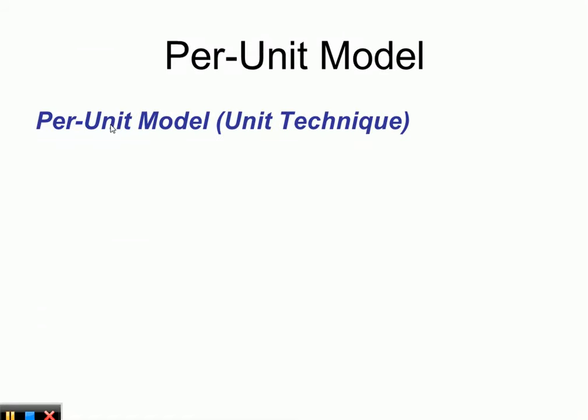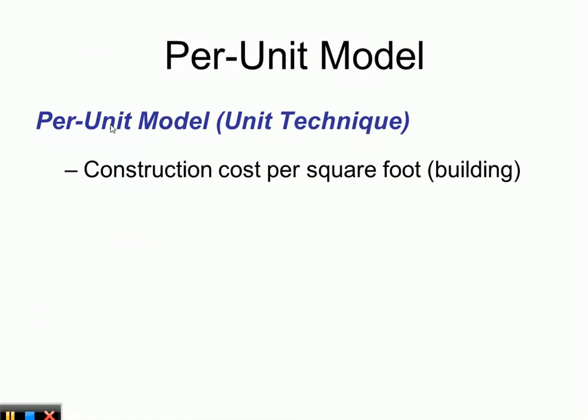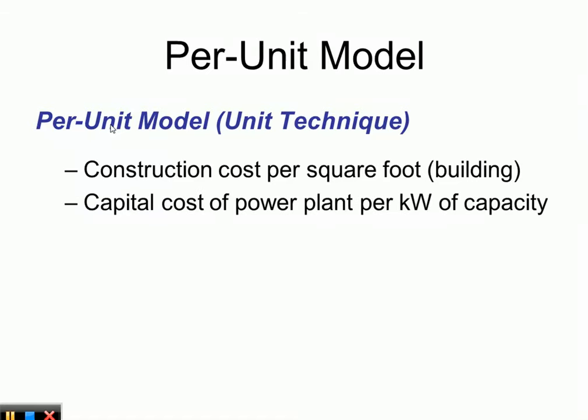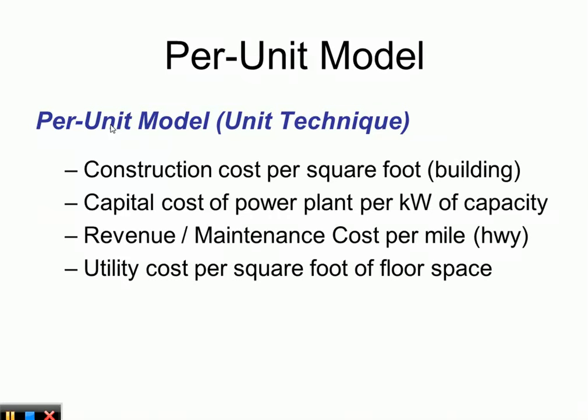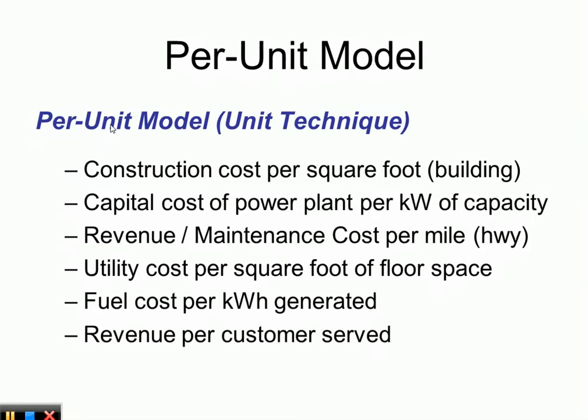The per-unit model, also known as the unit technique, is used in construction to determine construction costs per square foot. It also applies to capital cost of a power plant per kilowatt capacity, revenue and maintenance cost per mile of highway, utility cost per square foot of floor space, fuel cost per kilowatt generated, and revenue per customer served.